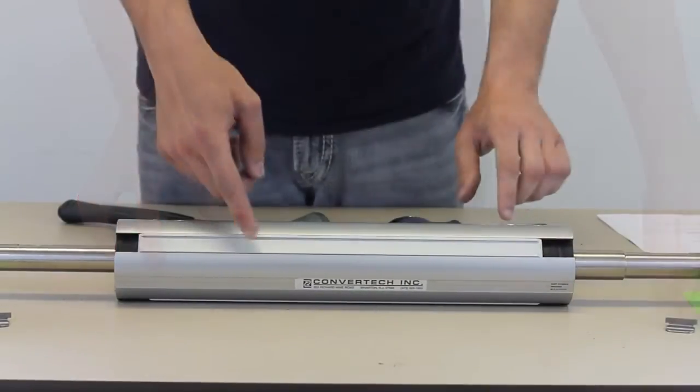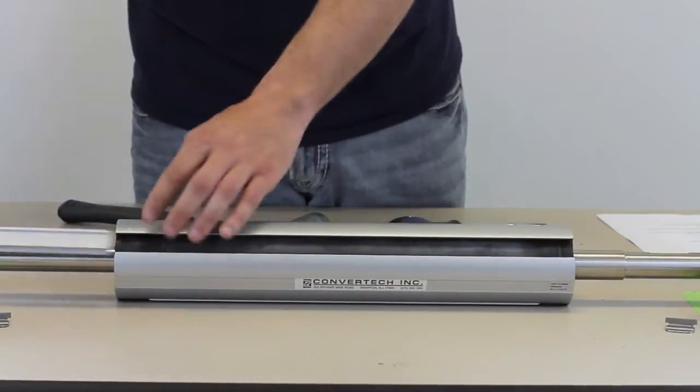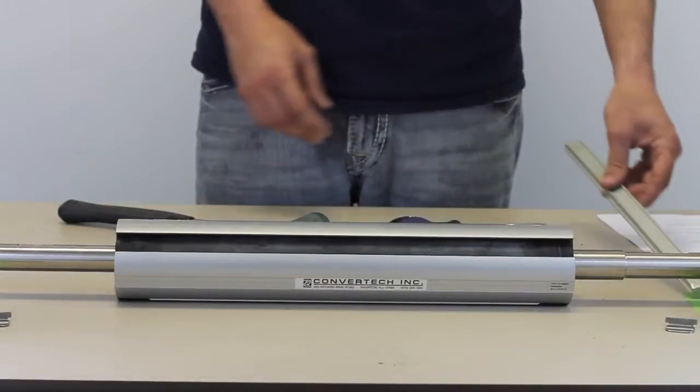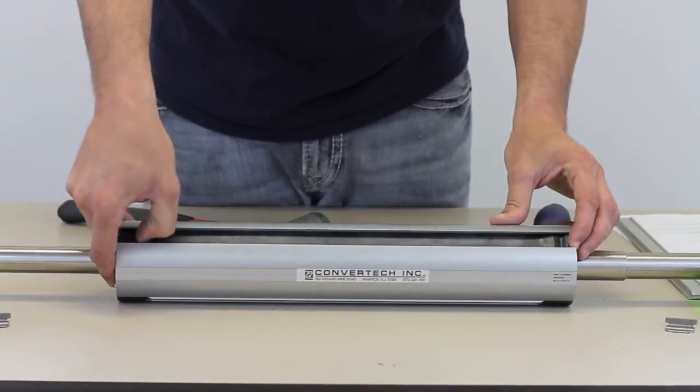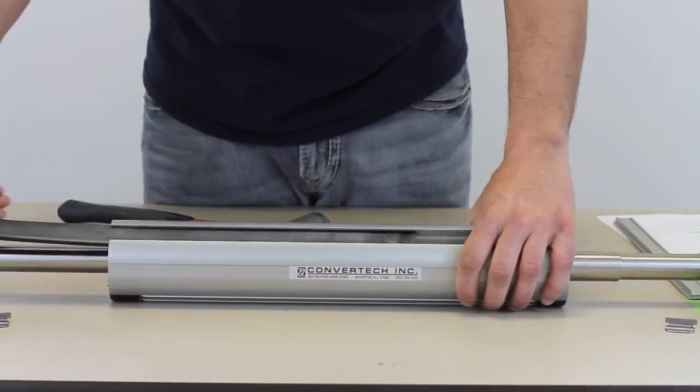Next, remove the lugs by sliding them out. Remove the bladders by sliding them out of the lug channel. Repeat this step for each lug on the shaft.